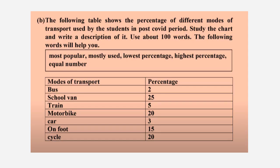The following table shows the percentage of different modes of transport used by the students in the post-COVID period. Study the chart and write a description of it — use about 100 words. The following words will help you. Here you can see a table that shows the mode of transport and the percentage: bus, school van, train, motorbike, car, on foot, cycle.